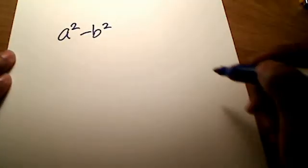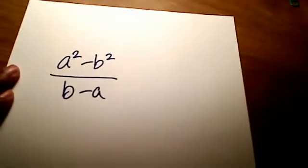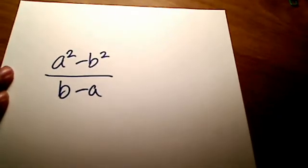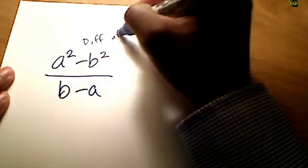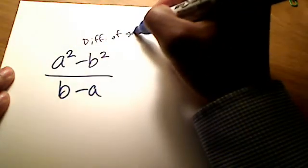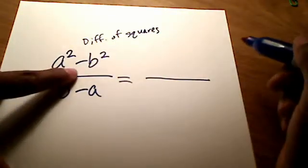I've got a squared minus b squared all over b minus a. Do you recognize the numerator? Yeah, it's a difference of squares. So, once you recognize that, then we can rewrite that numerator. And I showed this in a previous video.